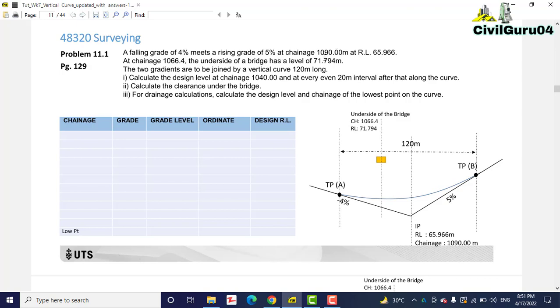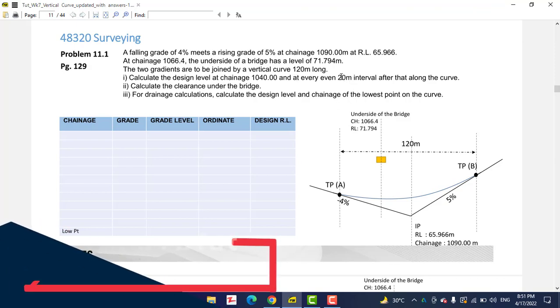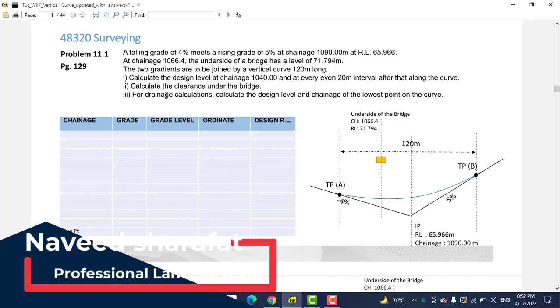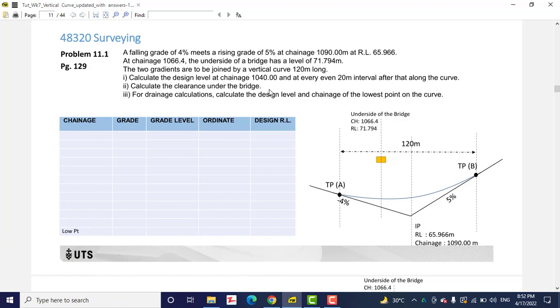Here we have an example for the sag curve which has a falling grade of 4% that meets a rising grade of 5% at chainage 1090.00 meters and reduced level of 60.5966 at chainage 1006.4. The underside of a bridge has a level of 71.794 meters. We are going to calculate the design level at chainage 1440.00 and at every even 20 meter interval along the curve.